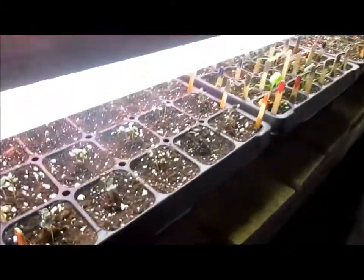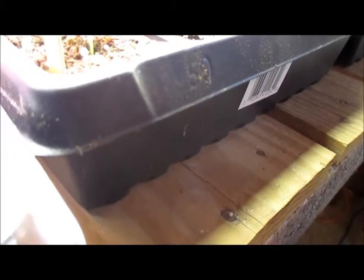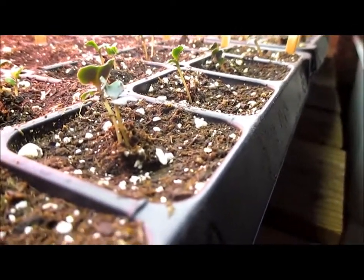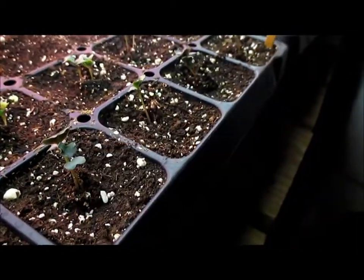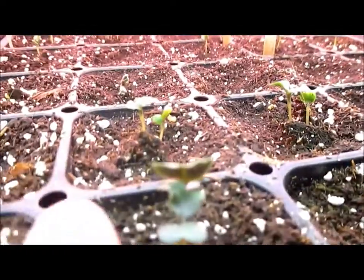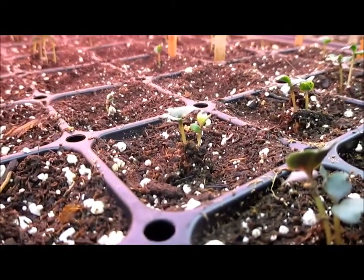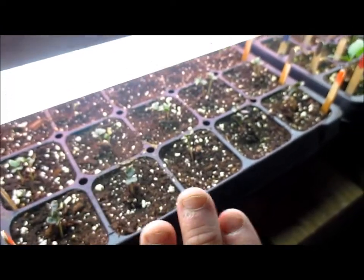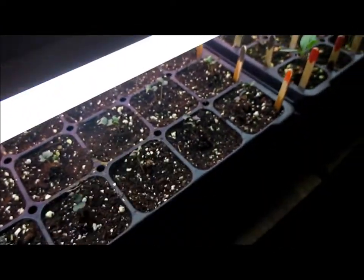Basically what I'm getting at is you can see here these are some broccoli plants right here, and you can see how they're leaning in. It's because they're stretching for the light which elongates the stem, which is what you don't want. Contrary to that, the one right next to it is growing straight up in the air because it's directly below the bulb.